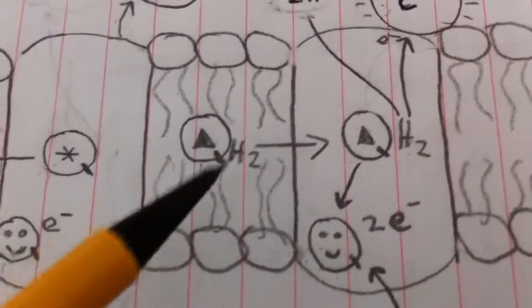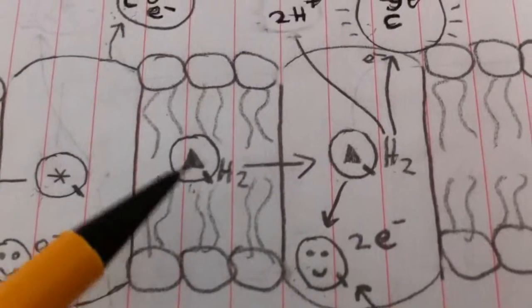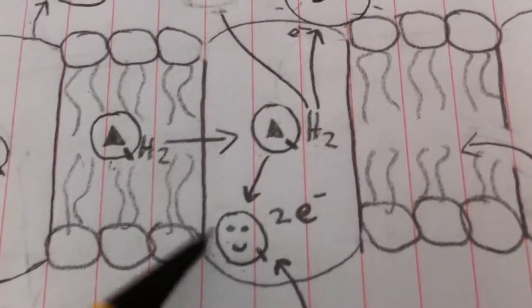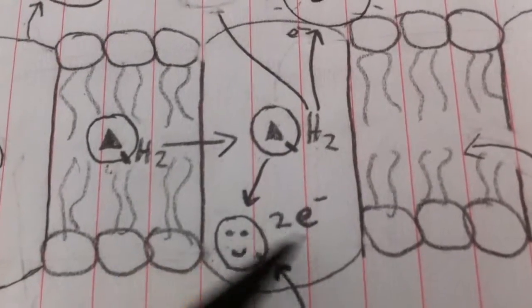So now a new coenzyme Q comes in from complex 1 or 2. It delivers another electron to this coenzyme Q, so now that's got 2.